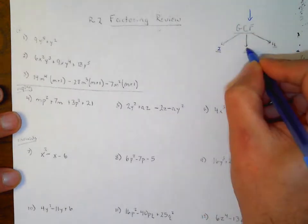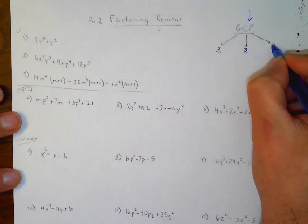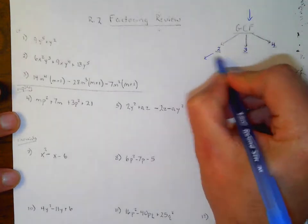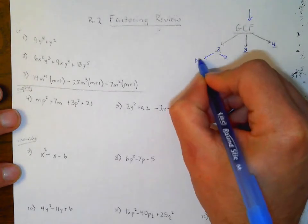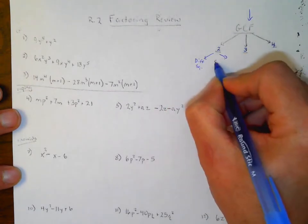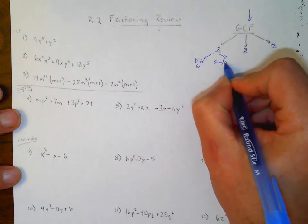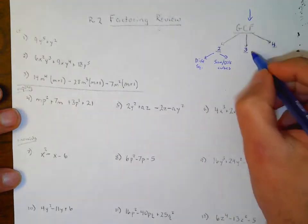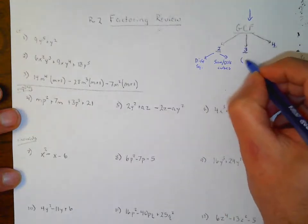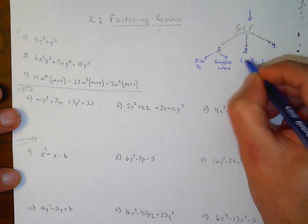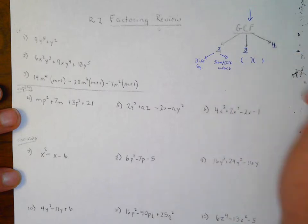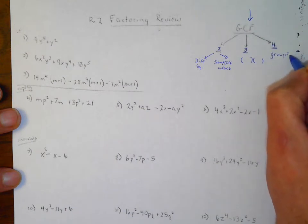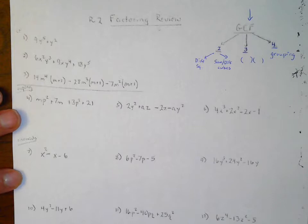Next, you want to look at how many terms it has — if it's a binomial (two terms), a trinomial (three terms), or four terms. If it has two terms, we look for a difference of squares or a sum or difference of cubes. With three terms, we set up two parentheses and put numbers in until it works. With four terms, we use factor by grouping.